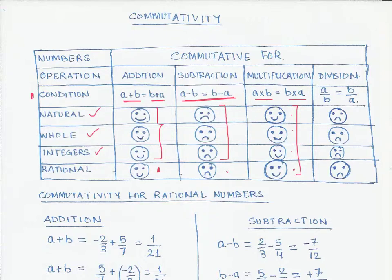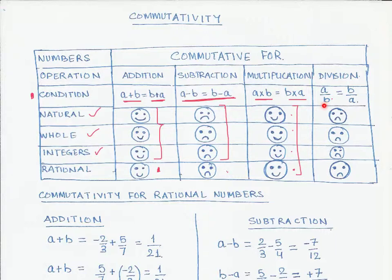Now let's look at division. The condition to check commutativity for division is: divide two numbers, a divided by b. Here, a is a type of number — for example, if we are taking rational numbers, a is a rational number and b is another rational number. We check if a divided by b equals b divided by a for all numbers in a particular number system.